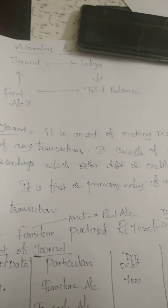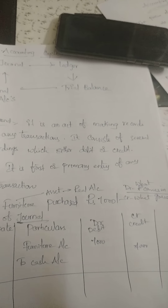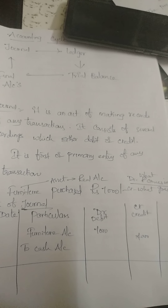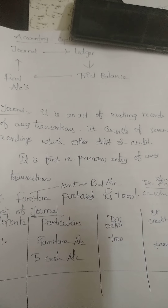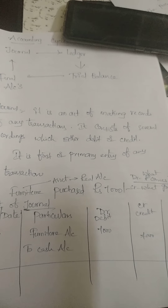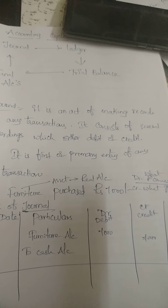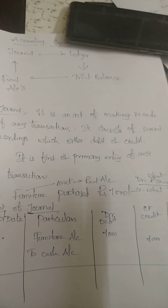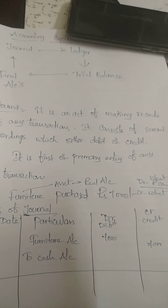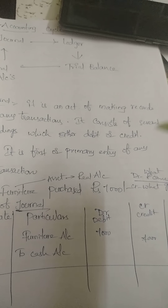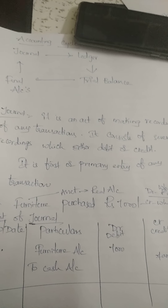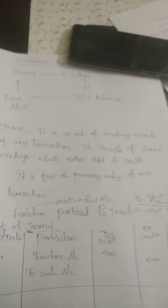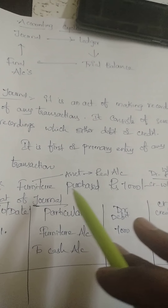The journal is an act of making records of any transactions. Recording means the journal covers the recording of transactions consisting of several entries, each either debit or credit, using the double entry system. It is the first or primary entry of any transaction — whatever transaction the company makes is primarily entered in the journal.